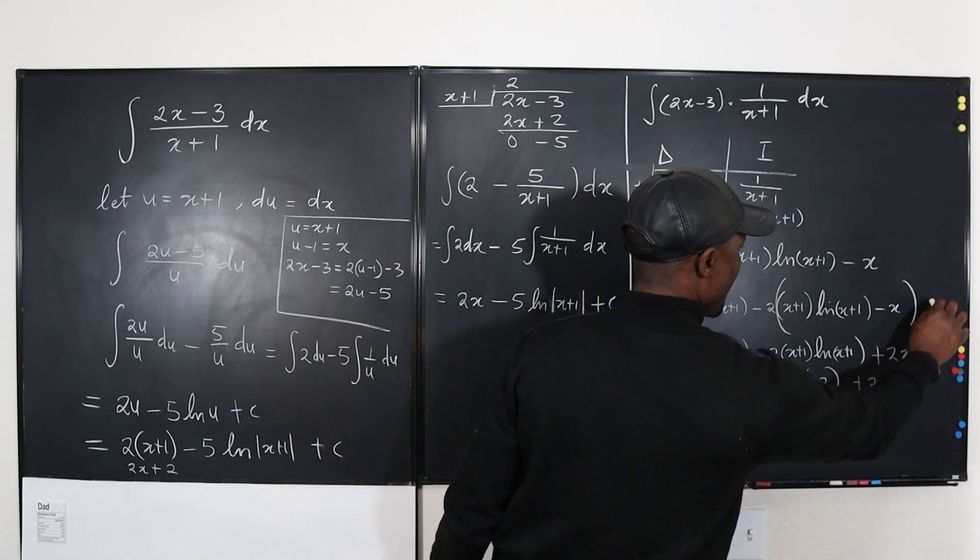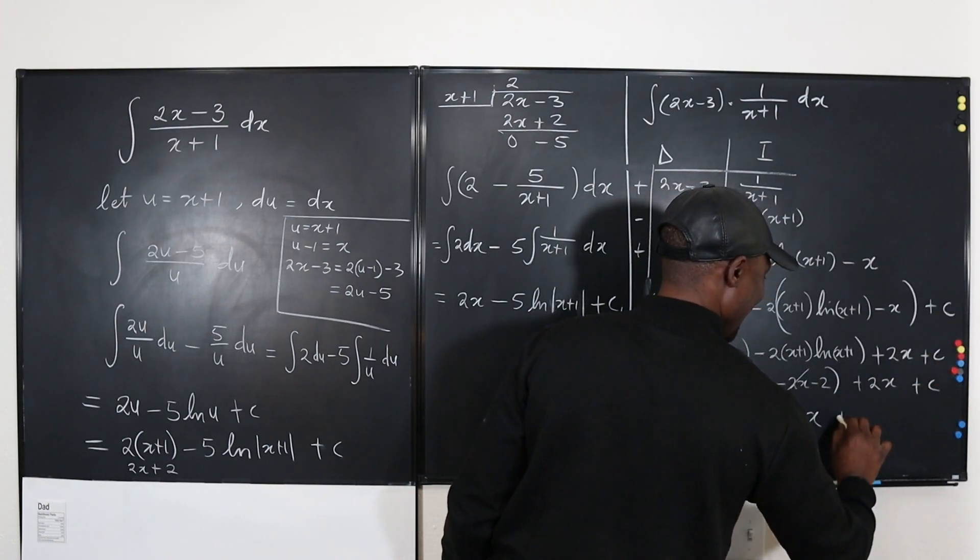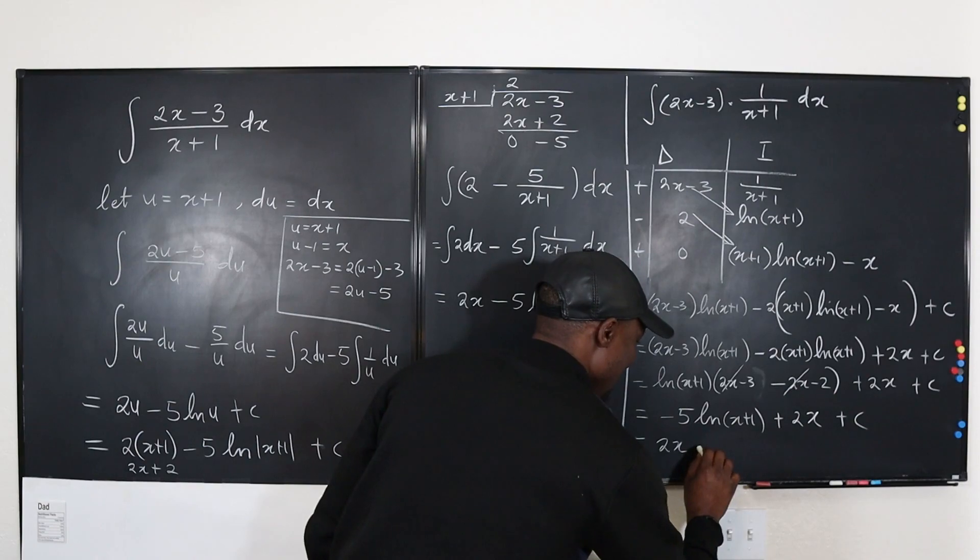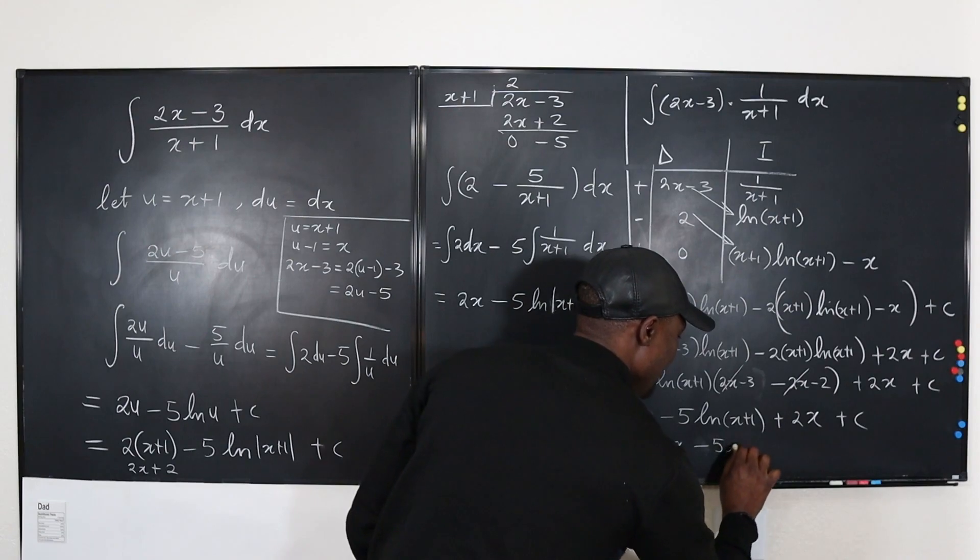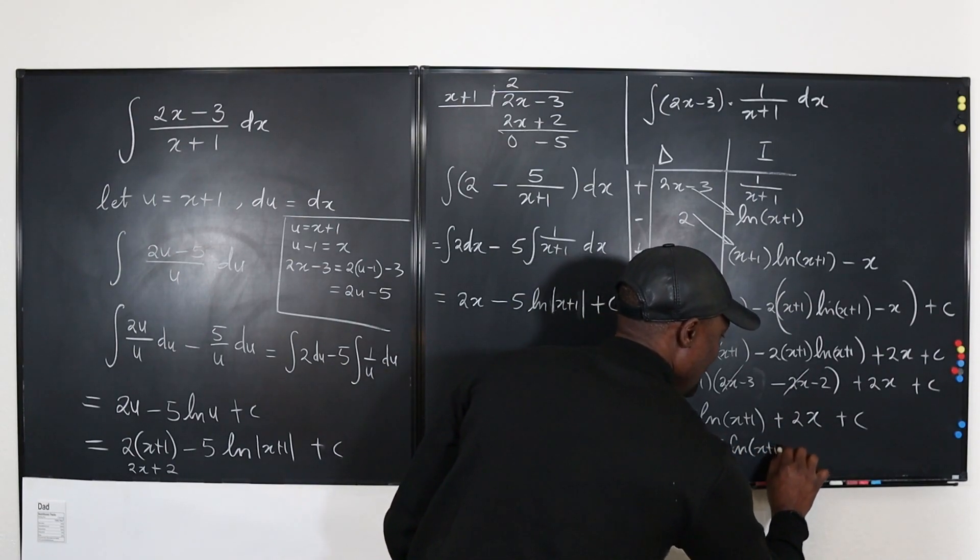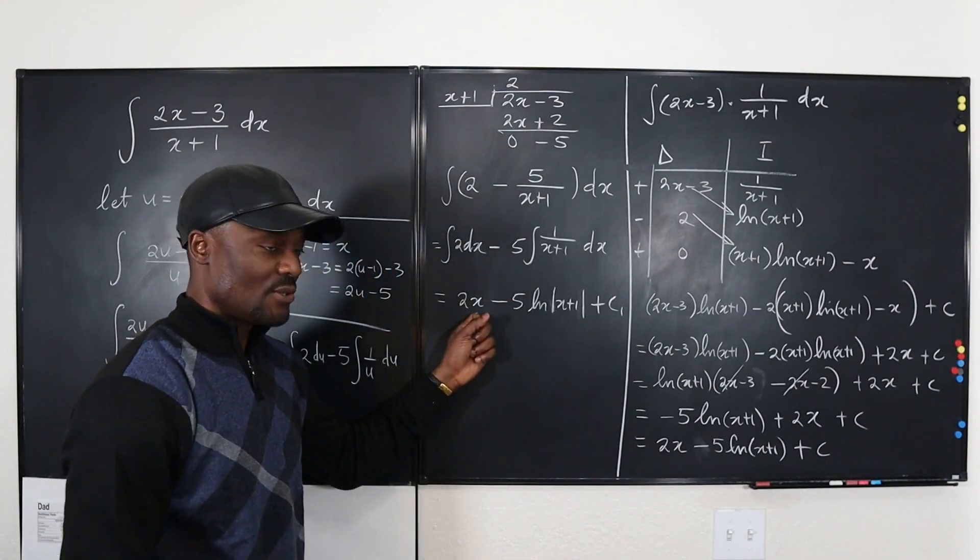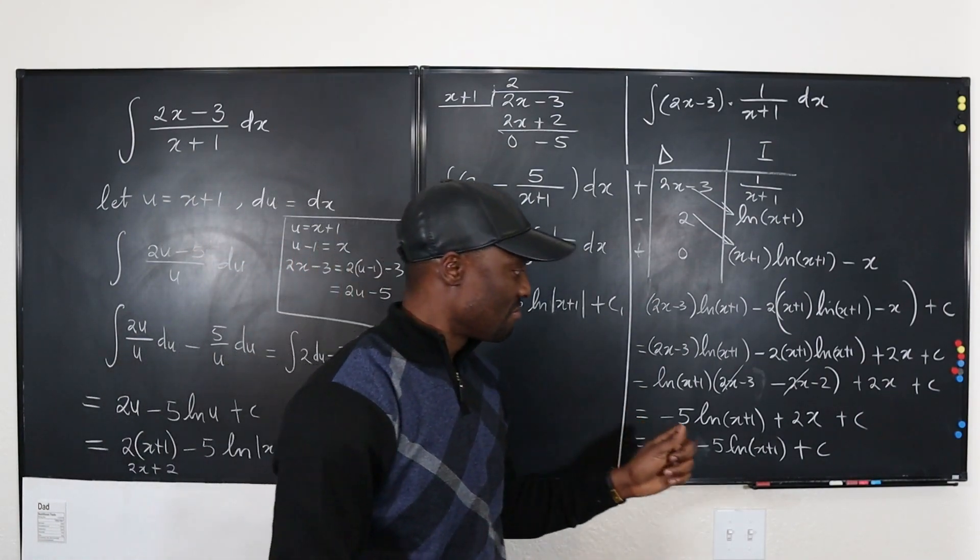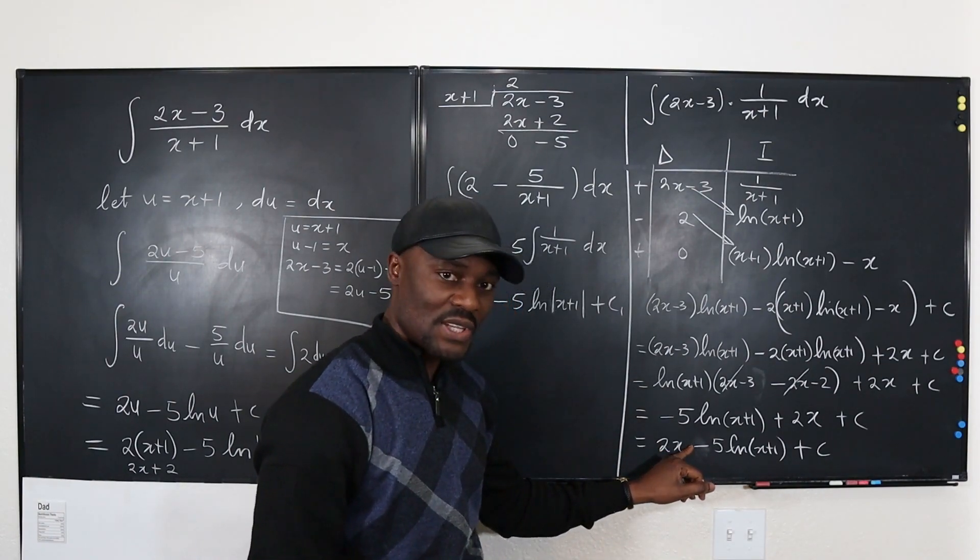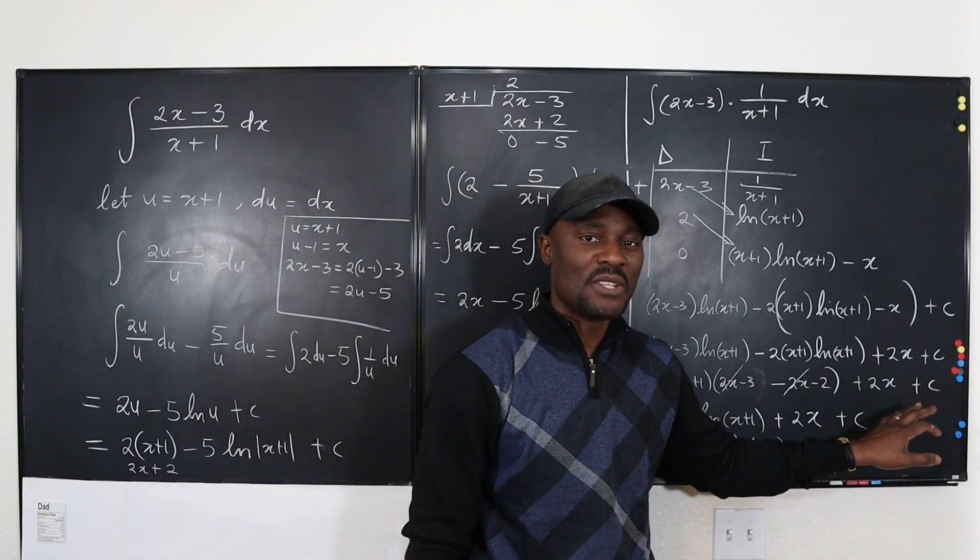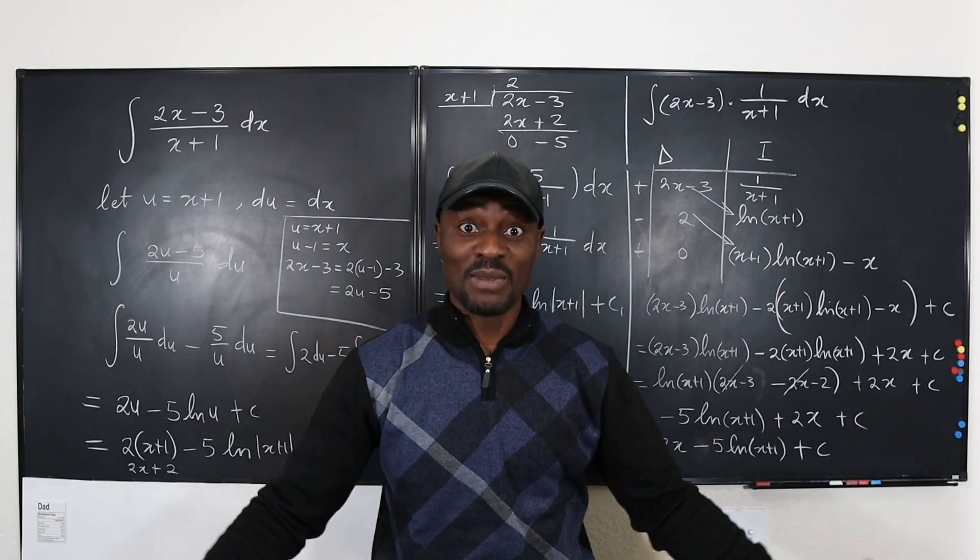Oh, by the way, we cannot forget this. So this is going to be 2X minus 5 ln of X plus 1 plus C. The same answer as we got here. So they are not wrong. Remember, if it's a constant, you can always move it to join the C, because C is in the family. So this C is the family of constants.